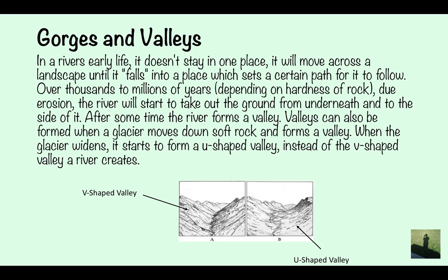Valleys can also be formed when a glacier moves down soft rock and forms a valley. When the glacier widens, it starts to form a U-shaped valley instead of the V-shaped valley the river caused. So here you can see the V-shaped valley, which is caused by the river, and you've got the U-shaped valley, which is caused by a glacier.